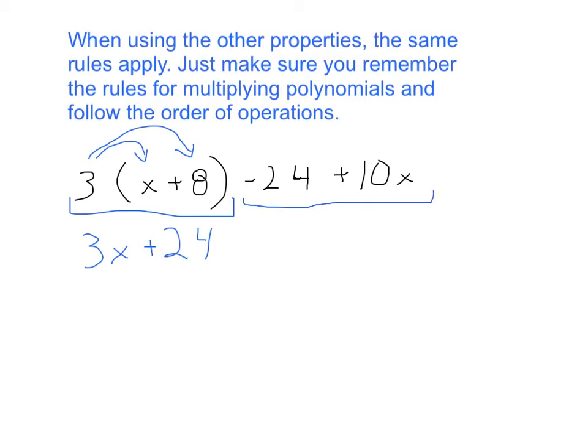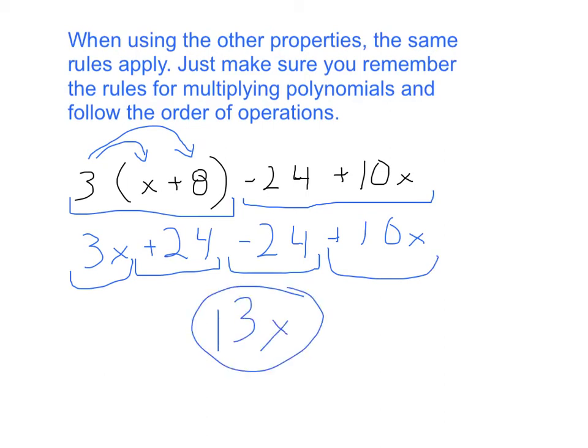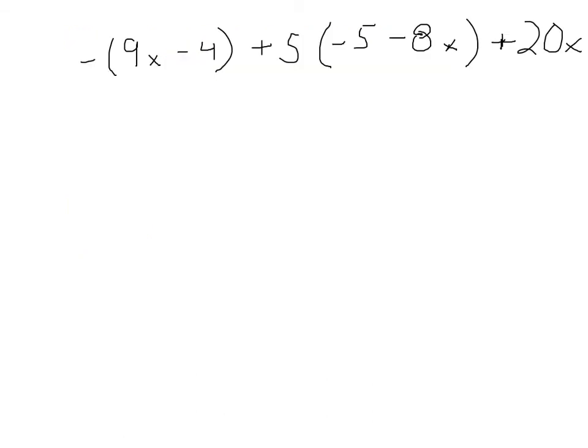And then we multiply 3 times a positive 8 gives us a positive 24. Now we carry these two terms down, minus 24 plus 10x. You notice we have a positive 24 here and a negative 24 here. Those will end up canceling each other, and then we will have 3x plus 10x, which will give us 13x as our final answer for this one.